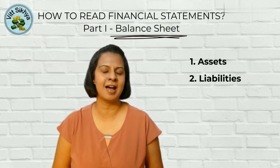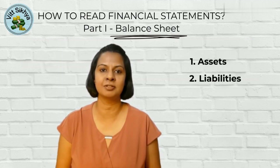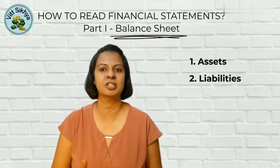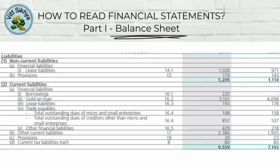Liabilities, on the other hand, represent what a company owes to others, such as suppliers, lenders, or employees. They can include accounts payable, loans or debts, and accrued expenses. Similar to assets, liabilities are categorized into current and non-current. Current liabilities are obligations expected to be settled within a year, such as short-term loans or payments due to suppliers. Non-current liabilities are long-term obligations, such as long-term loans or bonds.